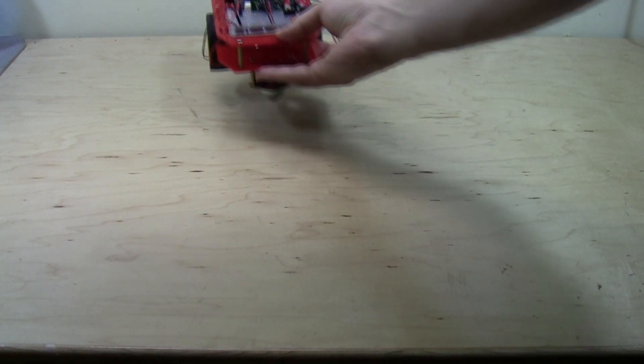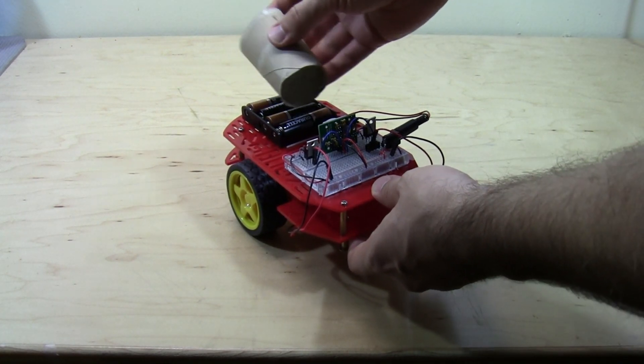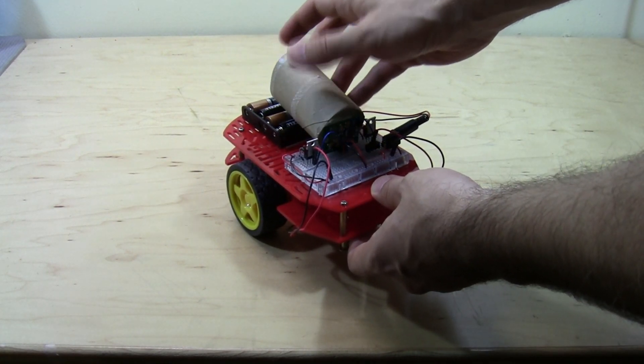This can make it difficult to handle the robot without accidentally triggering the sensor. You can fix this problem by limiting the sensor's field of view, for example by covering it with a cardboard tube.